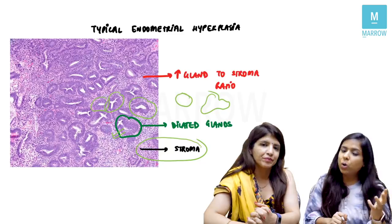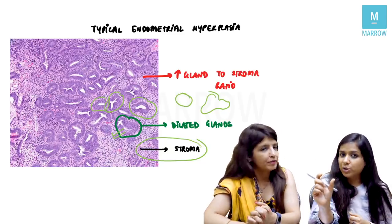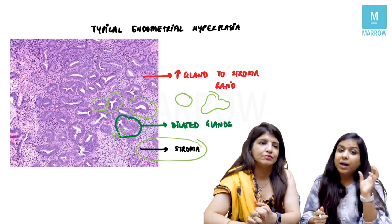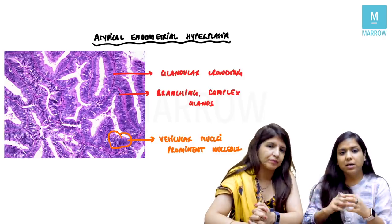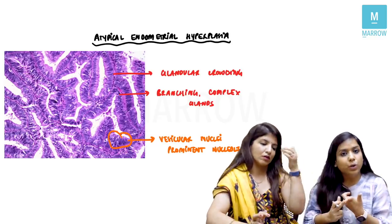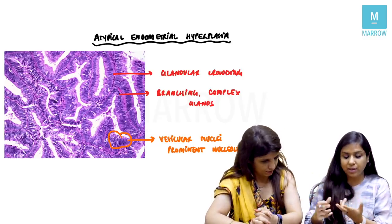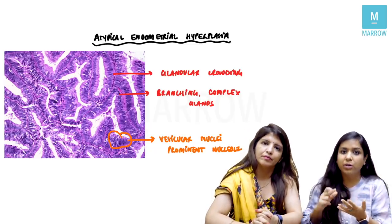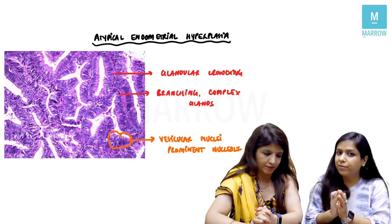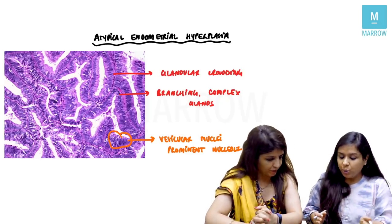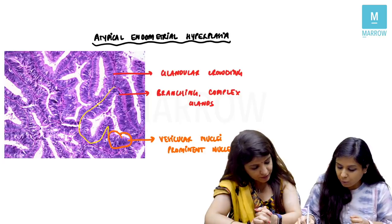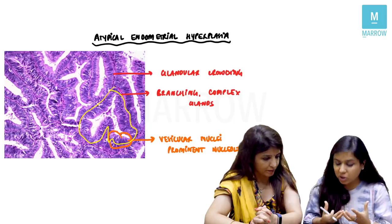Whenever the term 'atypical' appears in pathology, it points towards malignancy. Atypical cells show nuclear pleomorphism — variation in size and shape — hyperchromatic nuclei, prominent nuclei, and loss of polarity. In the image of atypical endometrial hyperplasia, you see no stroma, much more complex and branching glands, crowded glands with no fibromuscular stroma, and importantly, the nuclear features are highly abnormal.